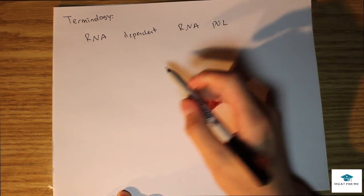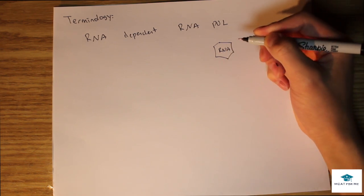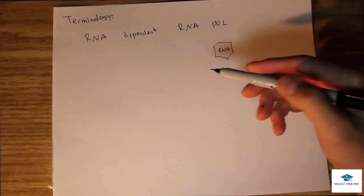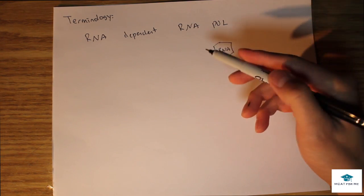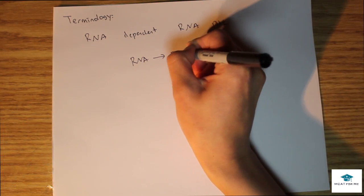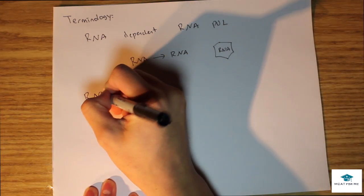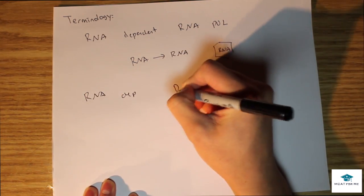What does this mean? This means that what we start with is RNA. It's RNA dependent, so the virus itself is going to have RNA within it. It requires an RNA polymerase to replicate it, so it's going to go RNA and go straight to RNA.